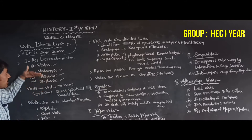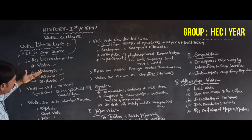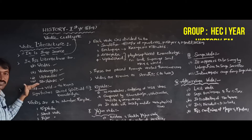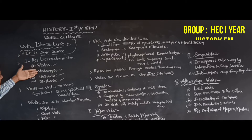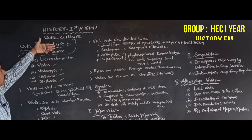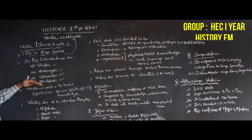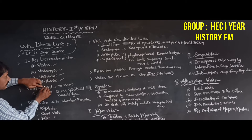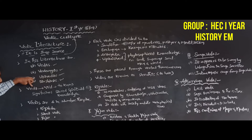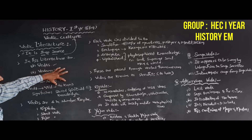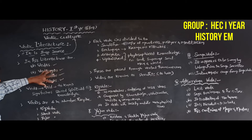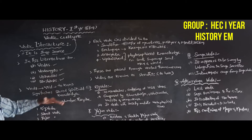What is Vedic Literature? Vedas, Vedangas, Upavedas, and Darsanas are the most important Vedic Literature; they give information about Vedic Culture. The word 'Veda' is derived from Sanskrit and means 'to know' or 'knowledge.' The Vedas give significant sacred spiritual knowledge.